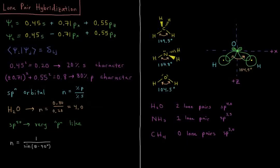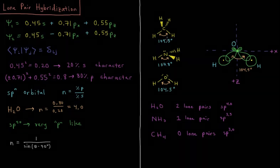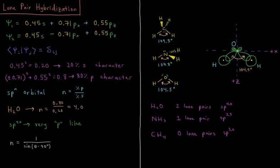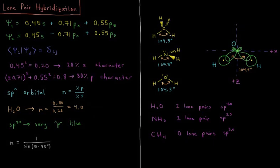This video will discuss lone pair hybridization in polyatomic bonding. In all the examples we've looked at thus far for hybridization—SP, SP2, SP3—in every case we had a central atom and external atoms that it was bonding to, but there were never any lone pairs. So what we're going to look at here is what is the case for hybridization when we do have lone pairs and how do things change?